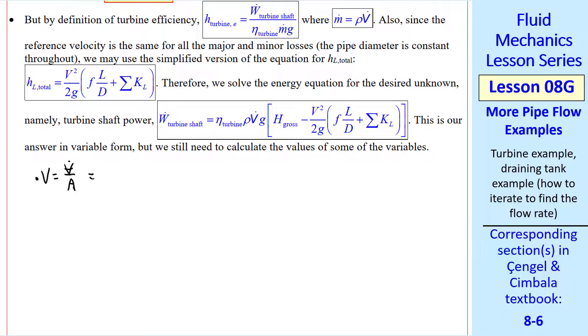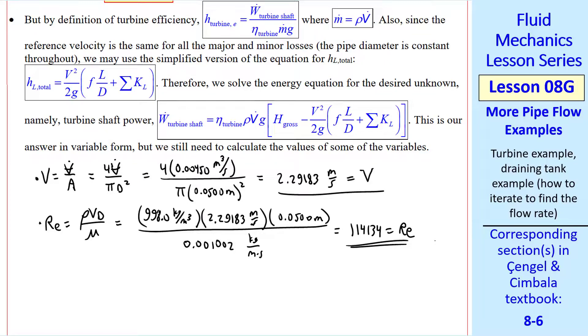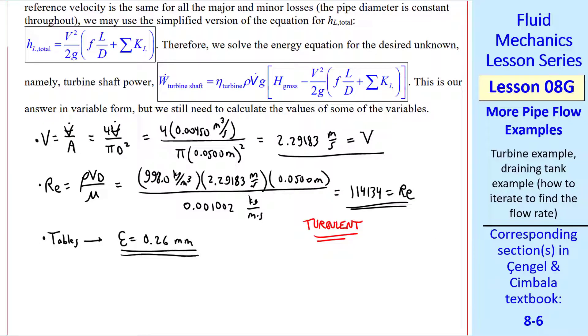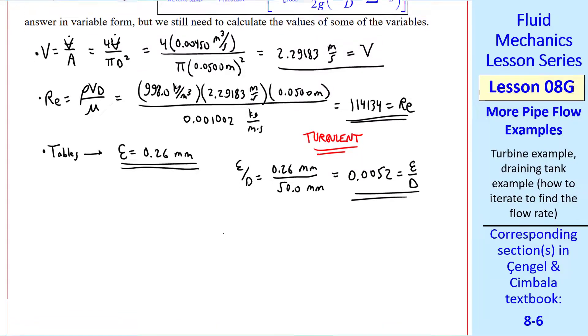We know that average speed is V dot over A, equal 4 V dot over pi D squared. I plug in the numbers and get V. I'm keeping lots of digits here because we need these values in further calculations, so I want to avoid roundoff error. The Reynolds number is rho VD over mu, and when I plug in the numbers, I get this value for Reynolds number, which is turbulent. We look up the average roughness for this type of pipe. We get 0.26 millimeters, and then we can calculate epsilon over D, the non-dimensional roughness coefficient.